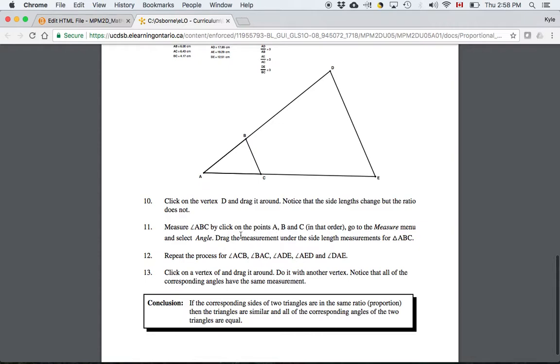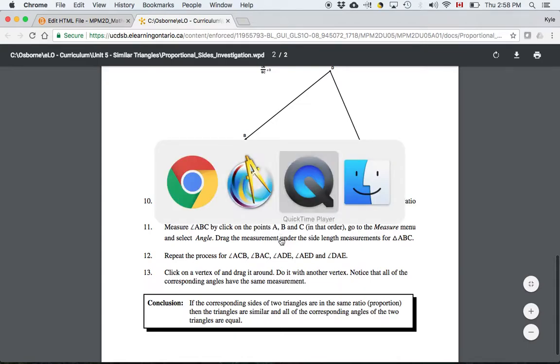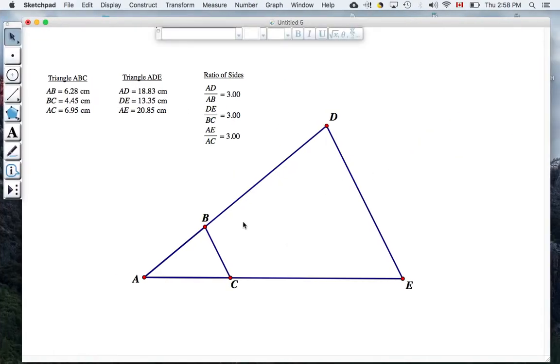So I'll show you how to do this for two corresponding angles, and then I'll leave you guys to do the rest. On our diagram here, corresponding angles would be angles that we expect to be the same, based on the fact that they are at the same point of the two triangles.